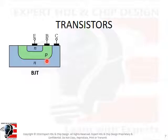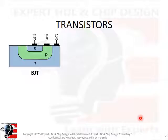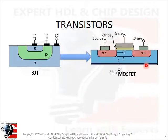Bipolar transistors are so named because they work as current-controlled current regulators. The control current must go through two types of semiconductor material — P and N — and the current consists of both electron and hole flow in different parts of the transistor. Transistors function as current regulators by allowing a small current to control a large current. The amount of current between the collector and emitter is primarily determined by the amount of current moving between the base and the emitter.